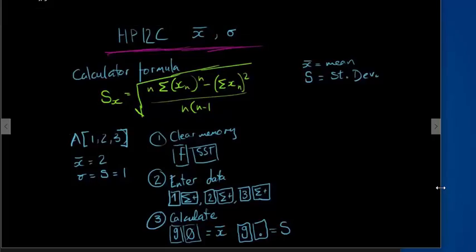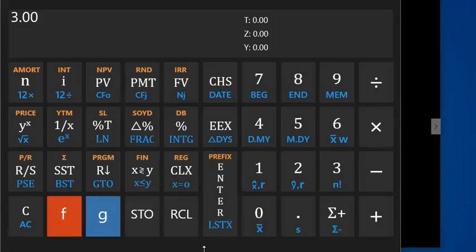In the third step, calculate. So now we can go directly to finding the mean and the standard deviation. So the mean of 1, 2 and 3, g 0. So g of 0 gives us the blue function, which is x with the hat, which is the mean. The mean is equal to 2.